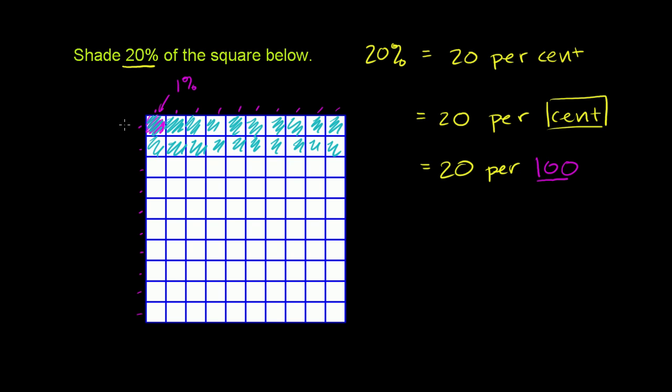Or another way of thinking about it, if you take this larger square divided into 100 equal pieces, I've shaded in 20 per 100, or 20% of the entire square. Hopefully that makes sense.